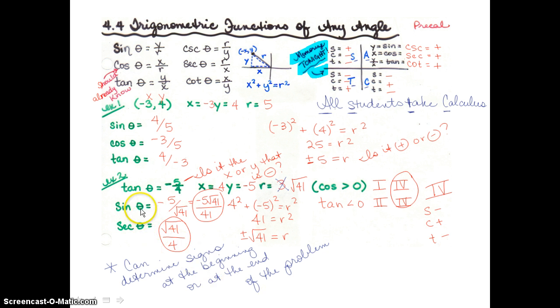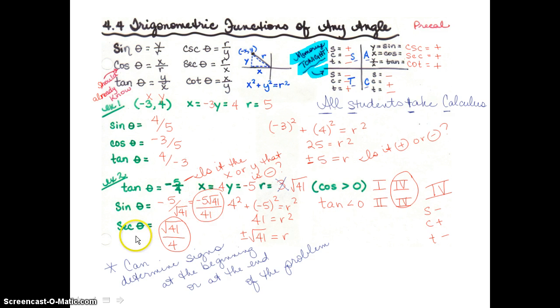So for our answers here, since sine is negative in the fourth quadrant, I put the negative in front. For secant — secant has the same sign as cosine — so it's positive, and I leave it positive.